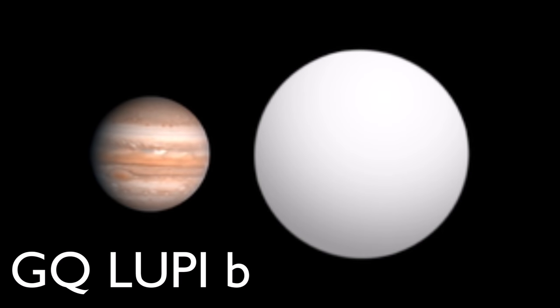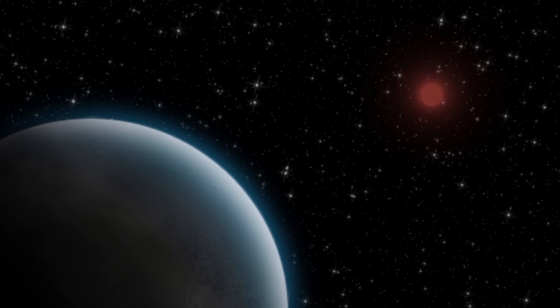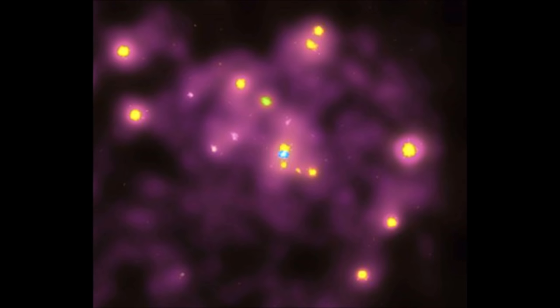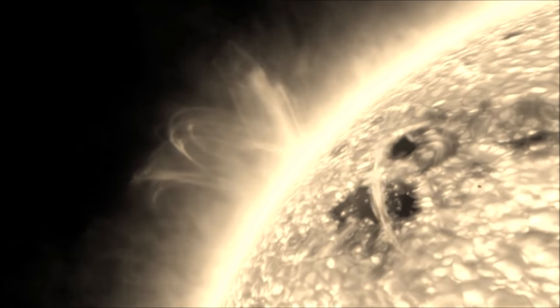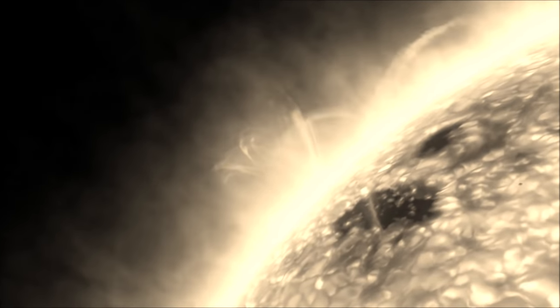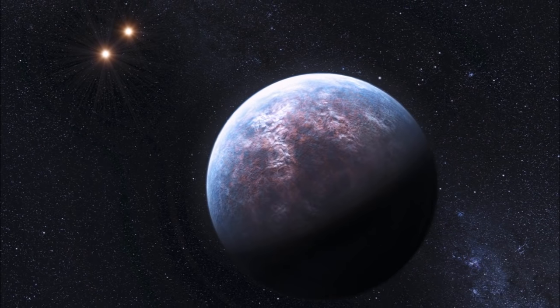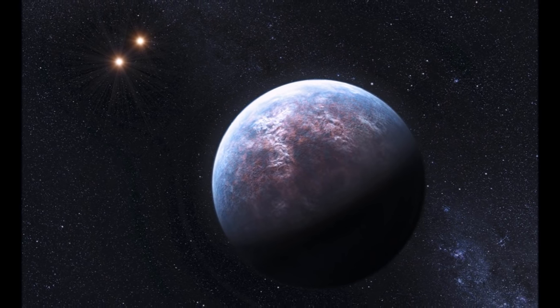Enter GQ Lupi b. Discovered in 2005, it orbits the star GQ Lupi in the constellation of Lupus, around 500 light years away. Given these planets are so small next to their stars and so far away, we use infrared techniques to identify them and it's not 100% confirmed that this isn't a brown dwarf or failed star as some call them, but it could well just fall behind the line that splits the largest gas giants from fusion capable failed stars. It is about two and a half times bigger than Jupiter, but could be several times more massive. We don't really know, it's a bit of a guessing game. But that's just the beginning. Planets are underwhelming when it comes to size.